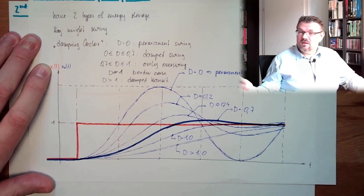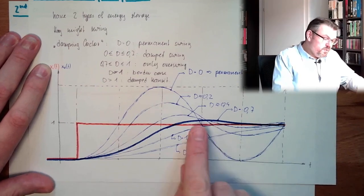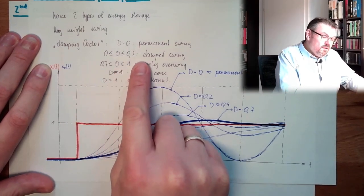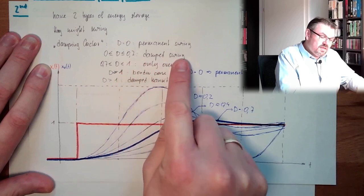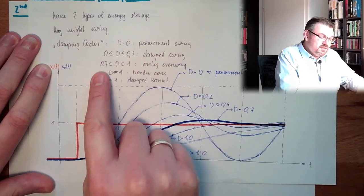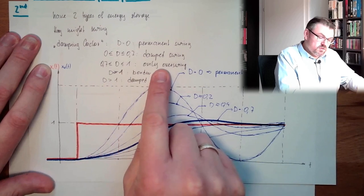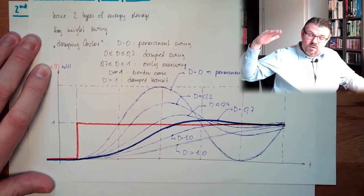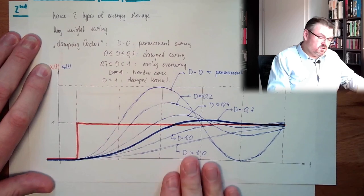What we have seen here, it was swinging. So we should be below 0.7, because then it's a damped swing. And between 0.7 and 1, we had only overswing. And so it was swinging quite a while. So we are below 0.7.